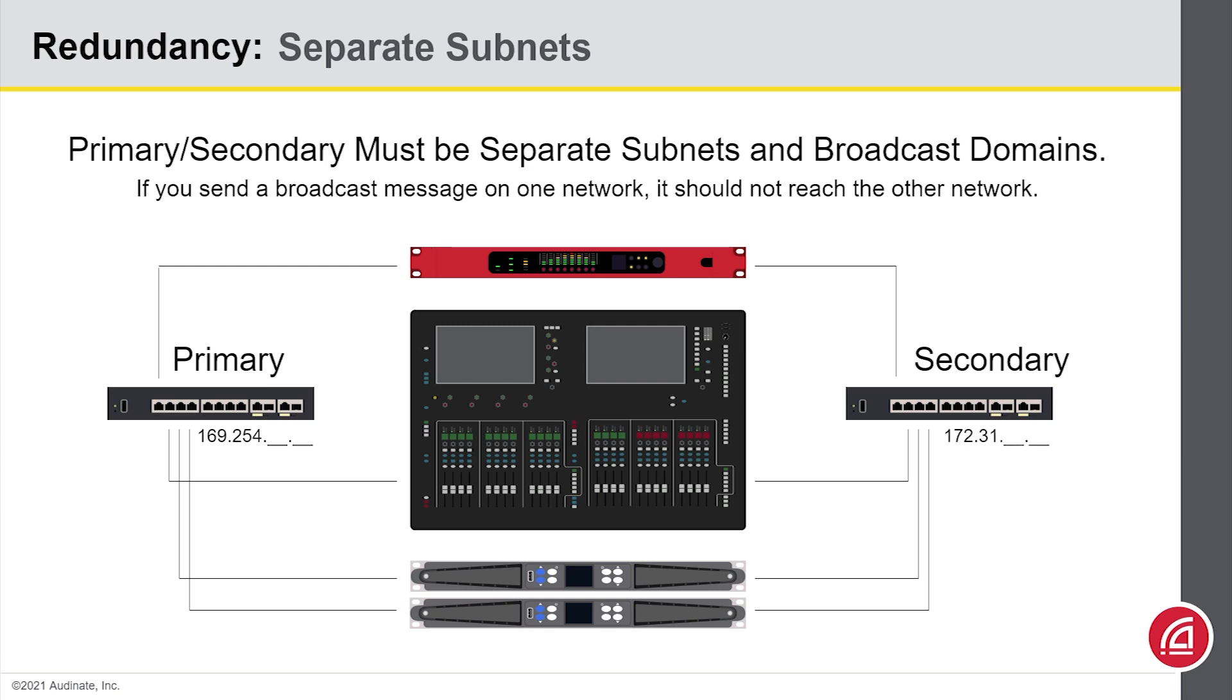The secondary port will use link local as well with one change. It will use the 172.31 range. And again, this is because we need to ensure that the two networks end up in different subnets.